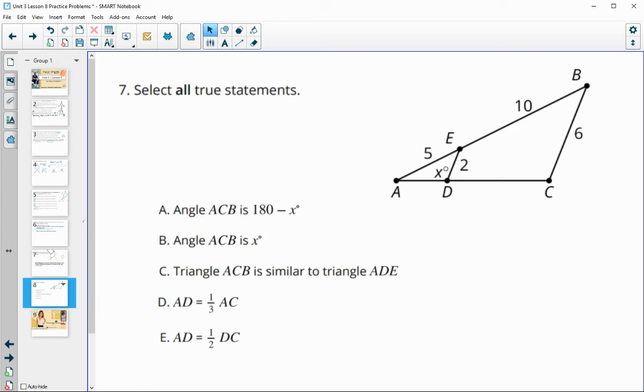All right, number seven, select all true statements. So angle ACB. So ACB is this one, is 180 minus X. That would be false because these two lines are parallel and these are corresponding angles. So they're going to be equal to each other, which is what B says. So they're going to be equal to each other, not equal to 180.